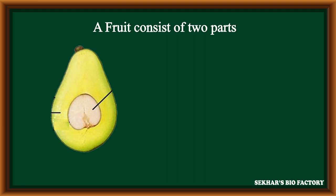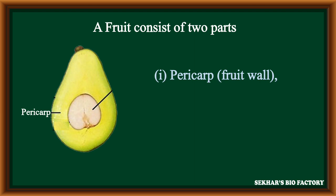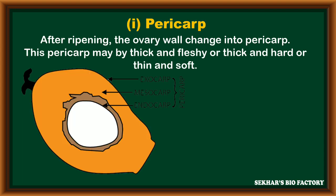In the structure of a fruit, generally two parts are present. The first part is pericarp or fruit wall, and the second part is seed. The pericarp is a protective layer or structure present around the fruit. After ripening, the ovary wall will become the pericarp, which may be thick and fleshy, thick and hard, or thin and soft in nature.